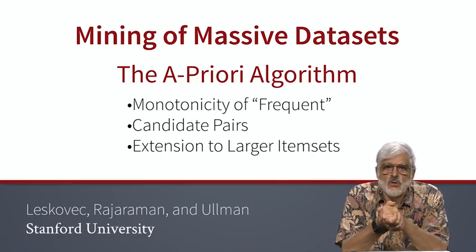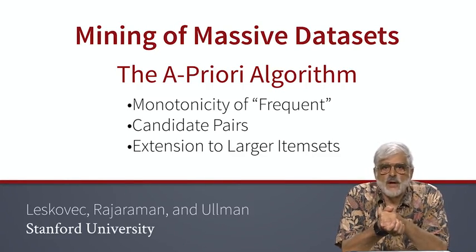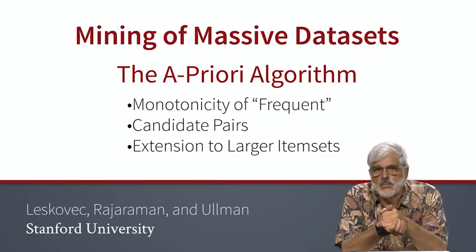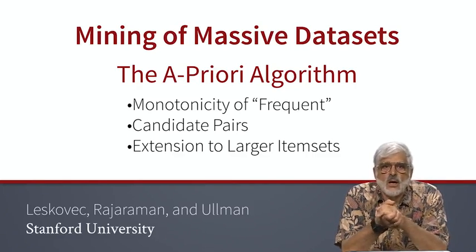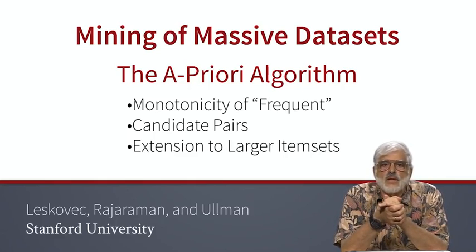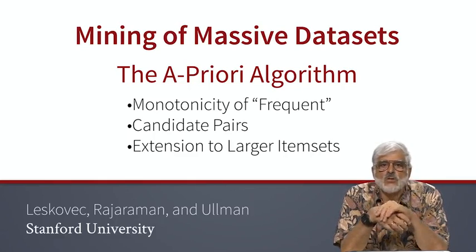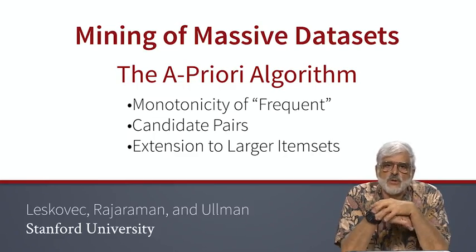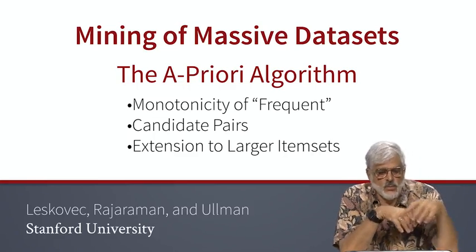The A-Priori algorithm uses one pass for finding the frequent items, then another pass through the data for finding frequent pairs. And if we want frequent triples, we need another pass, and so on. Each pass after the first can be thought of as having identified a small number of sets of the relevant size that might be frequent and therefore require a count. But the power of A-Priori comes from the fact that for many datasets, we can eliminate almost all sets from candidacy and thus greatly reduce the number of counts we need to maintain in main memory.